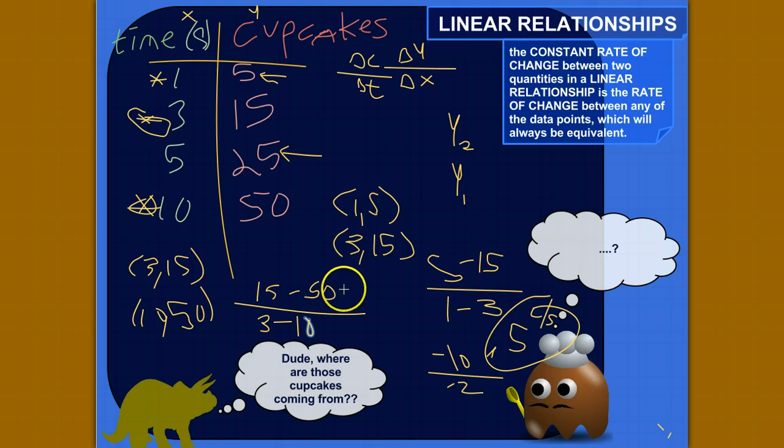15 minus 50 is—negative 35, excuse me. And 3 minus 10 is negative 7. I can simplify that, reduce that down. So the negatives cancel out, and 35 divided by 7 is 5.